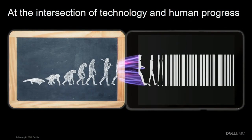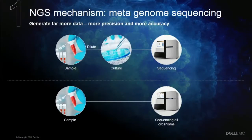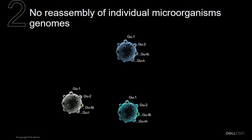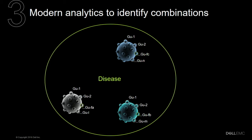At Dell EMC, we create technologies that drive human progress, and we are investigating a next-generation outbreak surveillance system that actually sequences all microorganisms within a biome — completely eliminating the isolation process and without stopping to reassemble the genome of individual microorganisms — using modern big data analytics to analyze all the virulence factors in the microbiome itself, to spot known or unknown combinations.